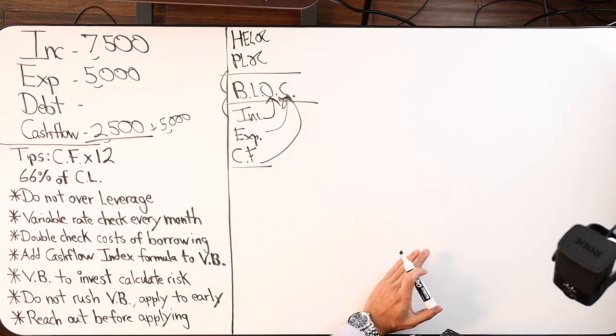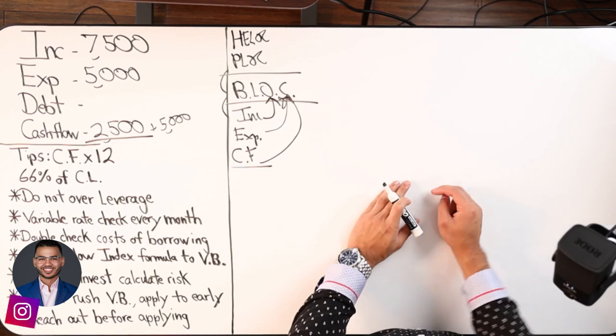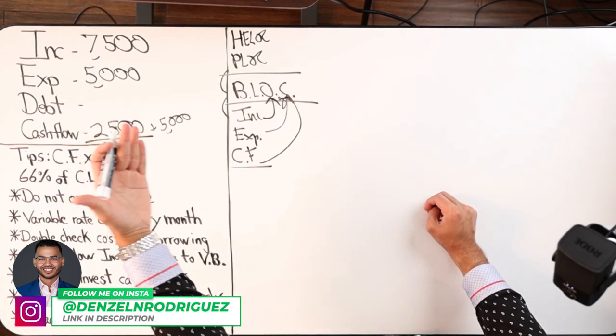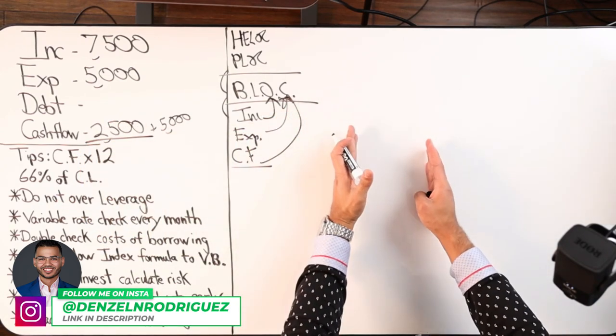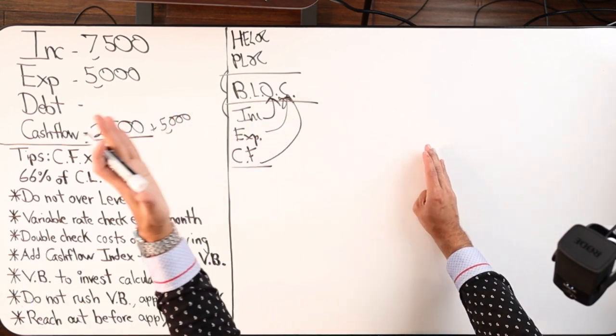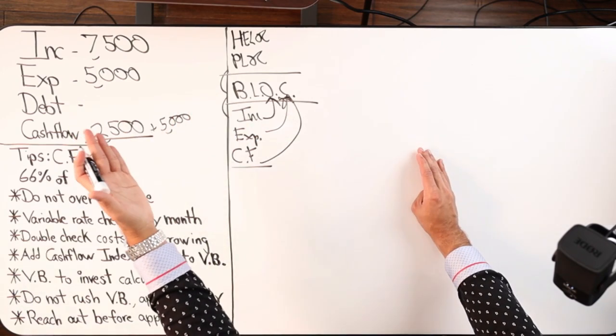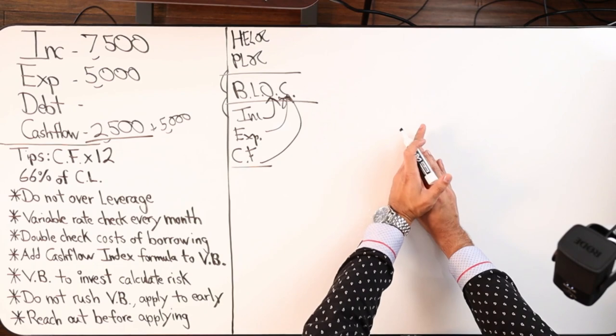Whatever debts you have on the business side, those would be the ones that you'd be paying off. If you are making a majority of your income from the business and let's say you have a lot of personal debt, you can move personal over to the business.